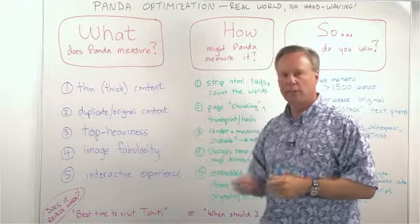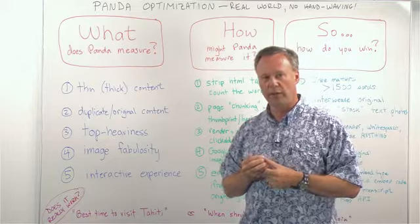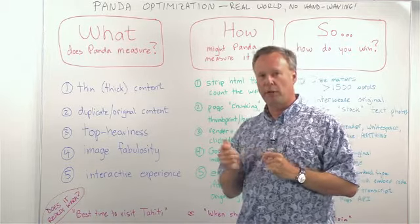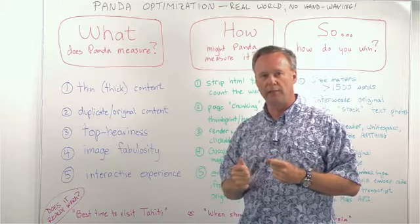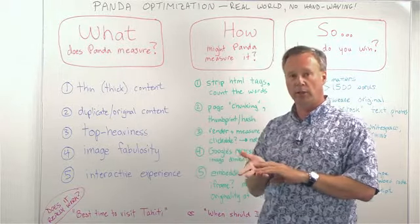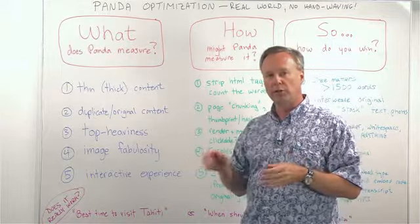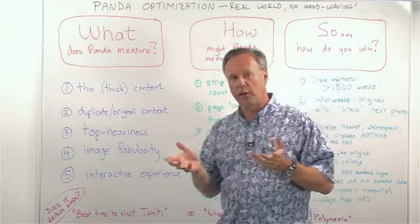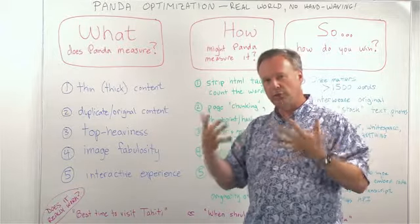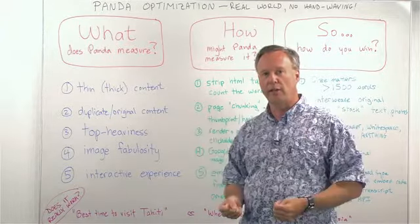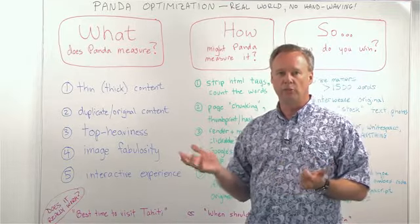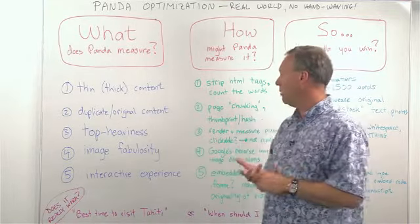Let's talk about top-heavy — a pretty important part of the Panda algorithm. When people talk about the top-heavy algorithm, the example they give is ads above the fold. But if you actually read what Google said about it when they launched it, it's not just about ads above the fold. It's about anything that's not content above the fold — your site structure pushing content down so that when the user lands on your page, they can't get anything useful without scrolling.